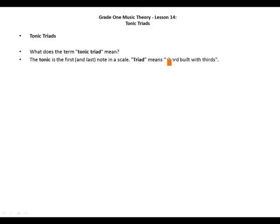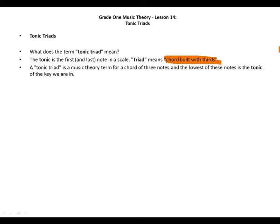A tonic triad is a music theory term for a chord of three notes, and the lowest of these notes is the tonic of the key we are in. Here's a tonic triad in G major.